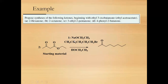To synthesize 2-octanone: we have one carbon in the starting material and need to build seven more carbons — one, two, three, four, five, six, seven. The ester is first alkylated, then hydrolyzed to give a carboxylic acid, then decarboxylation gives 2-octanone.